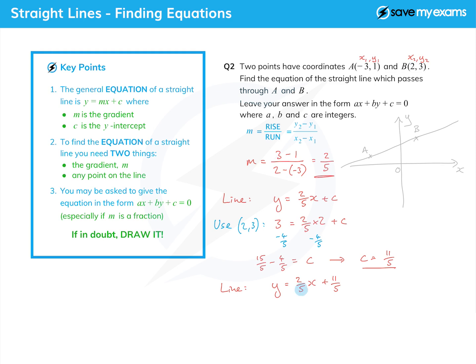How do we get it in that form? We multiply through by the denominator. There's only one denominator here, so we multiply through by 5. So we get 5y on the left, 2x and 11 on the right.